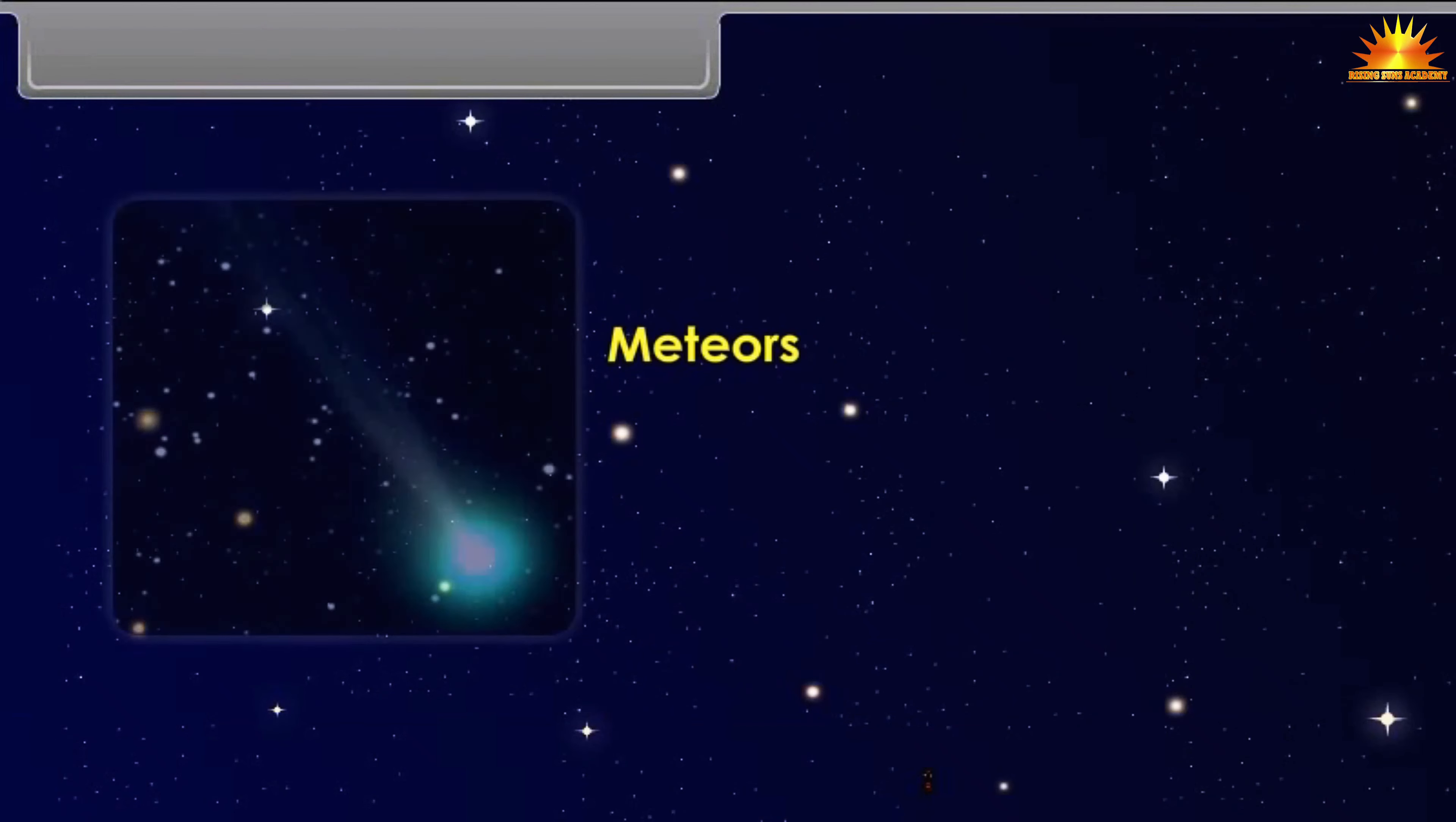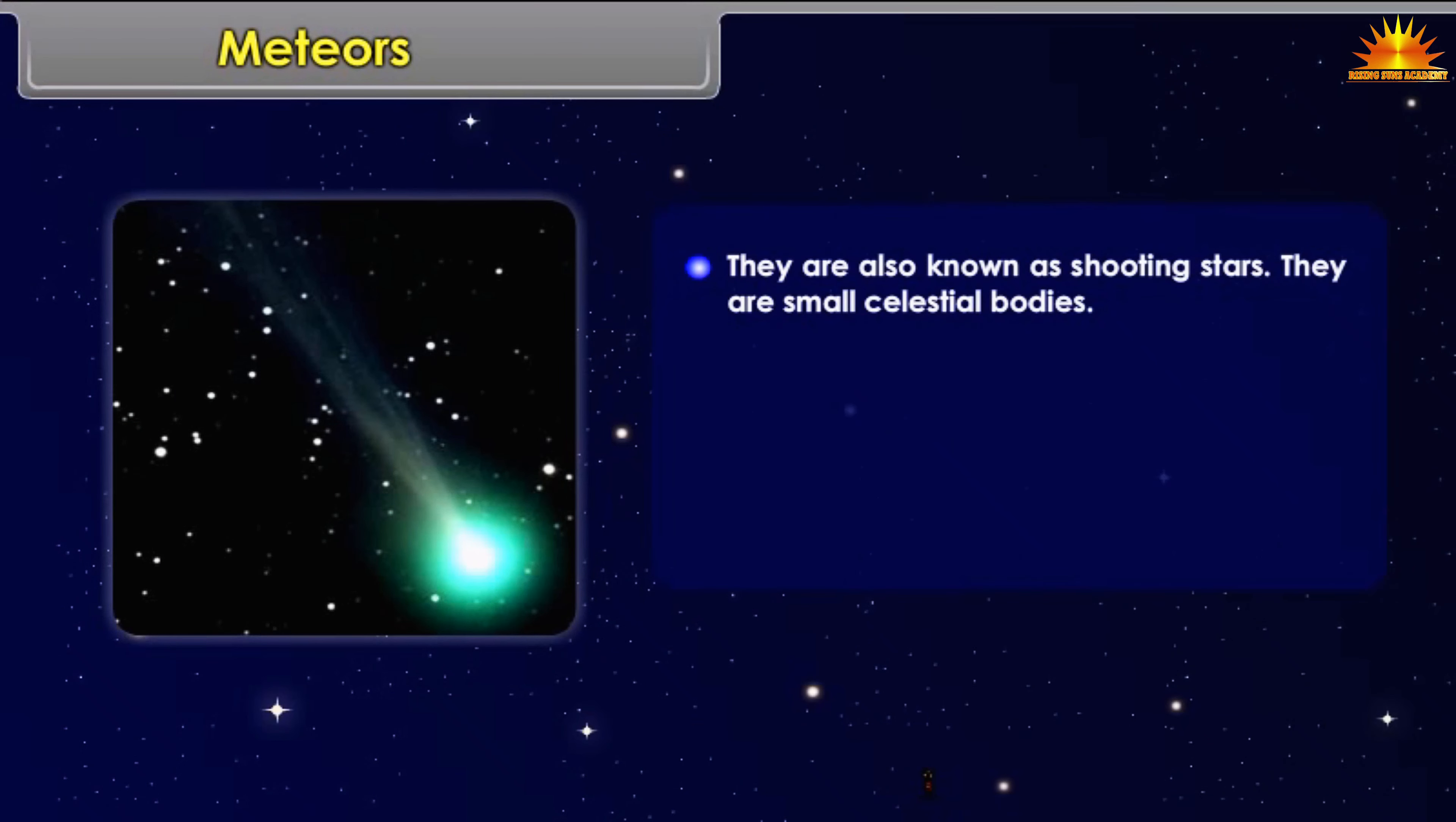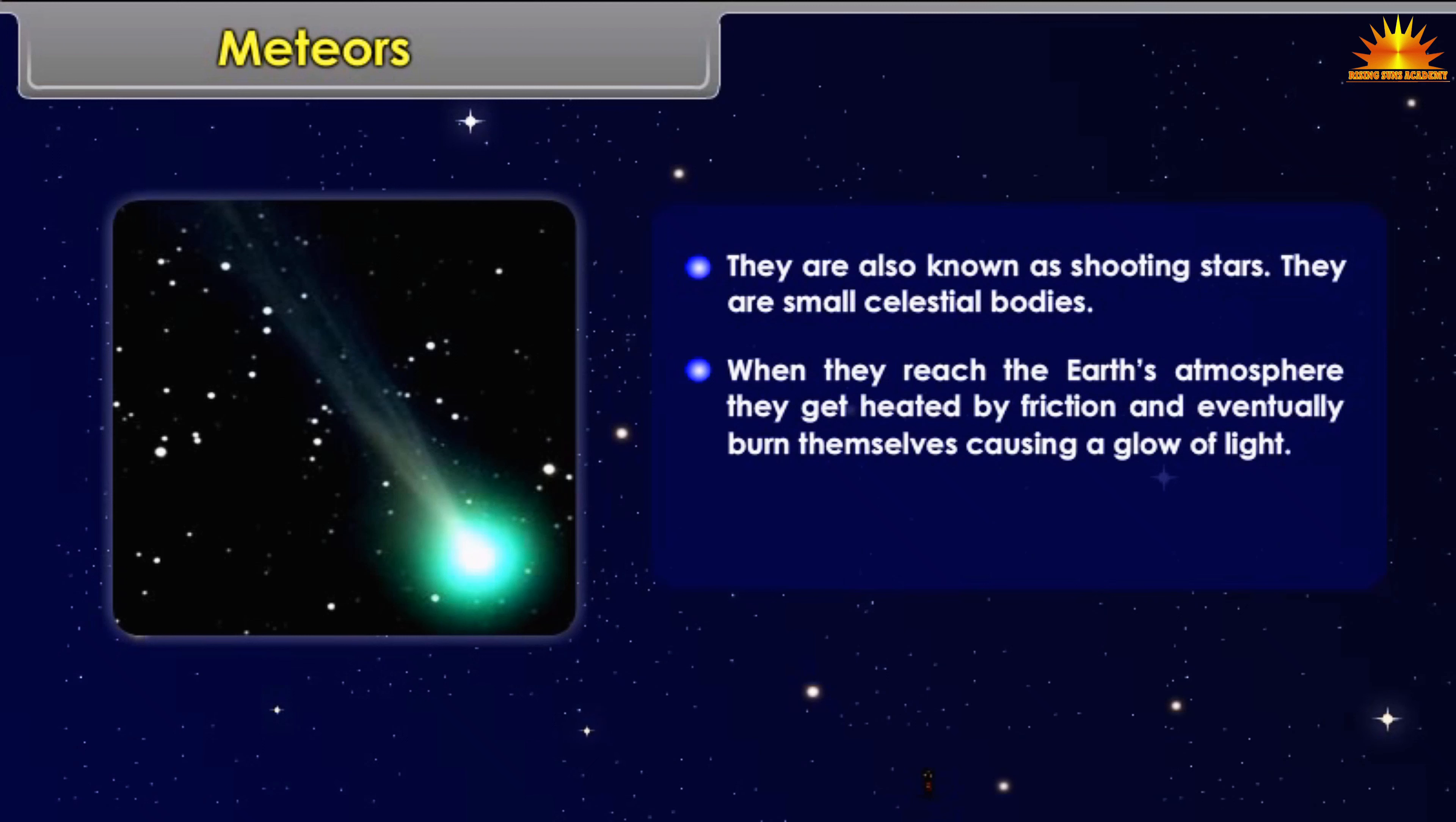Meteors: They are also known as shooting stars. They are small celestial bodies. When they reach the Earth's atmosphere, they get heated by friction and eventually burn themselves, causing a glow of light. They turn into fine dust before they fall onto the Earth.